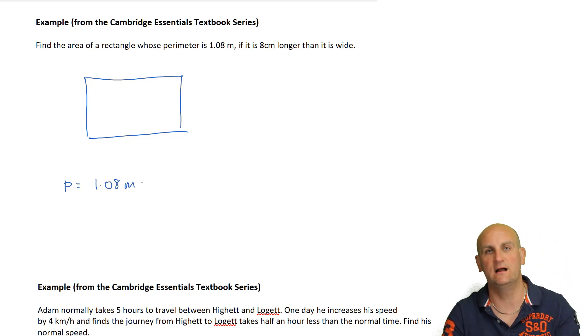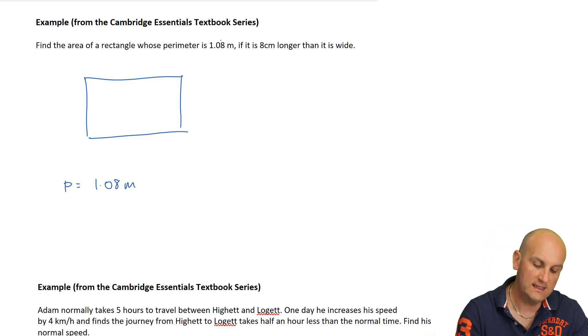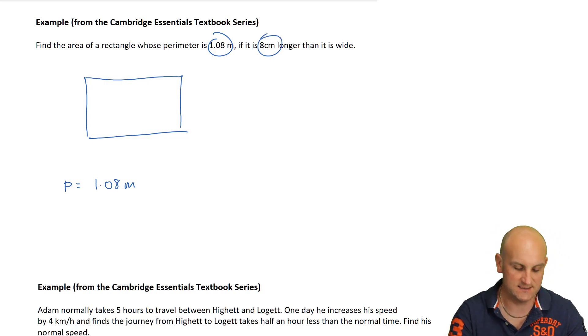The perimeter equals 1.08 meters. Notice what I'm doing: I'm writing down the key information, not the whole question, just what's important. If it is eight centimeters longer than it is wide, there we go. First trick: centimeters and meters. I'm going to change that into centimeters to keep my units the same. I can choose X for the width and I now know that becomes X plus eight.